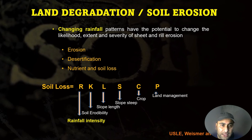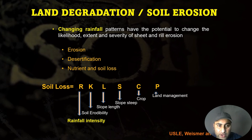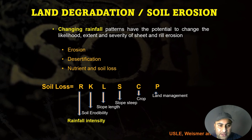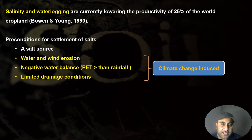Changing rainfall patterns due to climate change have the potential to change the likelihood, extent, and severity of sheet and rill erosion. There will be more erosion, desertification, and nutrient and soil loss. Soil loss increases with rainfall intensity, soil erodibility, slope steepness, and poor crop and land management. When rainfall increases, soil loss also increases proportionally.